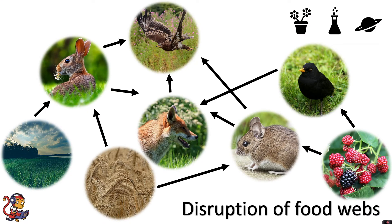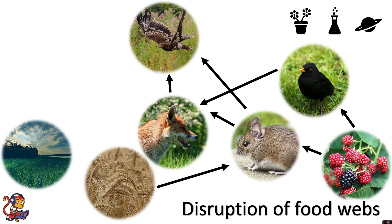In the previous video we looked at food webs and we showed how animals, plants, and all these living organisms are interacting with each other and relying on each other for food to survive. What would happen if we took just one of these organisms away? This could happen through habitat loss, hunting, or disease — the population numbers of the rabbits could decline or be wiped out completely, which could change the interactions between the organisms in this food web.